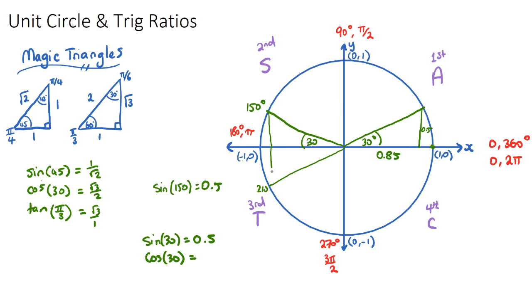But if I did sine of 210, which is down here, notice that I will have the same value of the height, 0.5, but now it's negative because it's going down. So sine of 210 is negative a half, or negative 0.5. And sine of this one here would be 30 down, so 330. This would be the same height but it would be negative again. So sine of 330 would be negative 0.5. And you can do this for cos—cos being the width—and tan for all of our key angles.